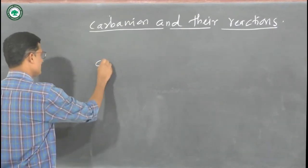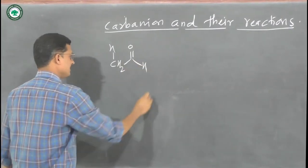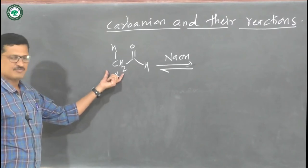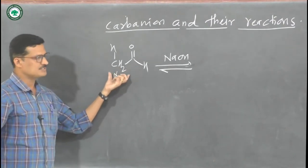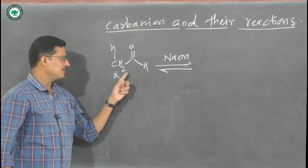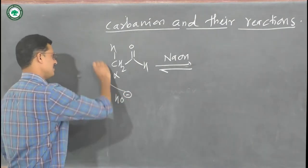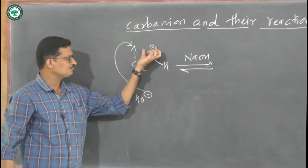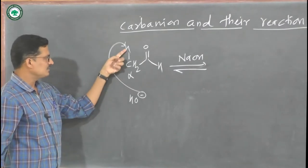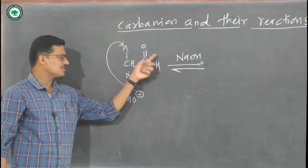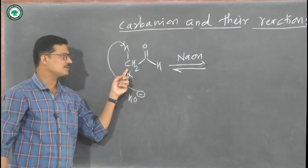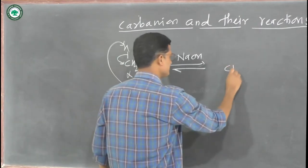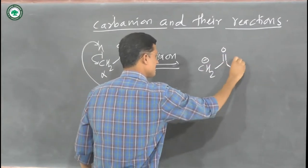As another example, take formaldehyde treated with NaOH. Formaldehyde has alpha hydrogen atoms. When carbonyl compounds — aldehydes and ketones — which have alpha hydrogen atoms are treated with a basic medium, the base abstracts the alpha hydrogen. This is because the carbonyl carbon is an electron-withdrawing group, giving the alpha hydrogen some acidic character. When treated with NaOH, the base abstracts the alpha hydrogen and there is formation of a carbanion.